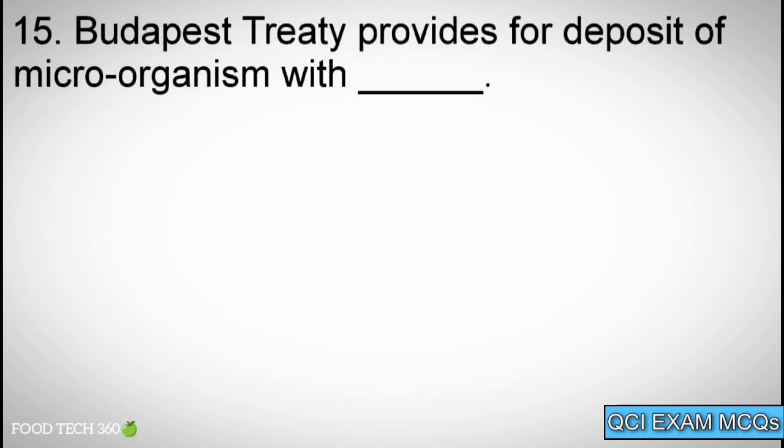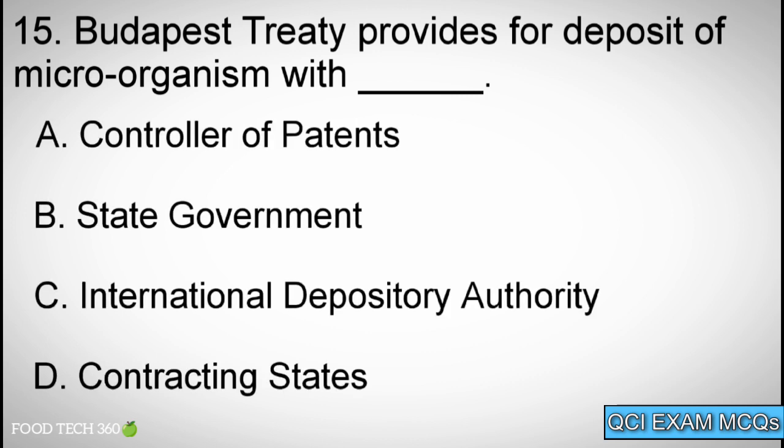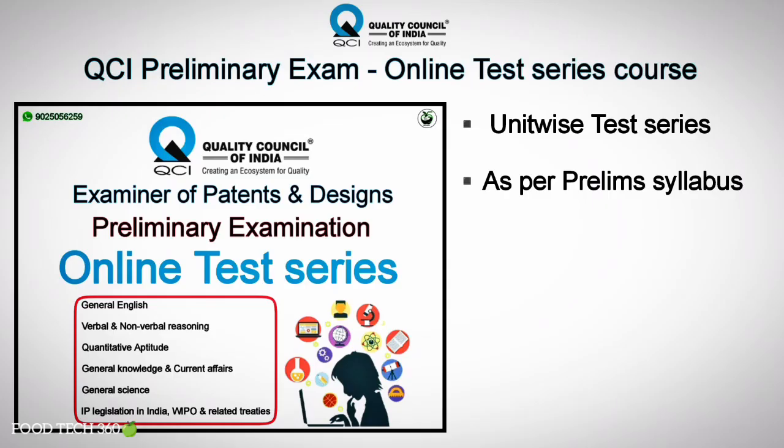Question number 15: Budapest Treaty provides for deposit of microorganisms with? Options: A. Controller of Patents, B. State Government, C. International Depository Authority, D. Contracting States. Correct answer: A. Controller of Patents.